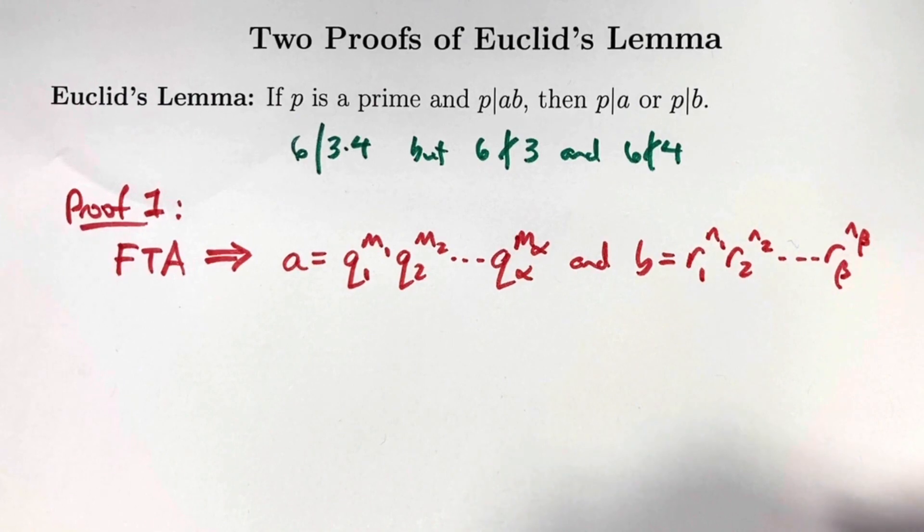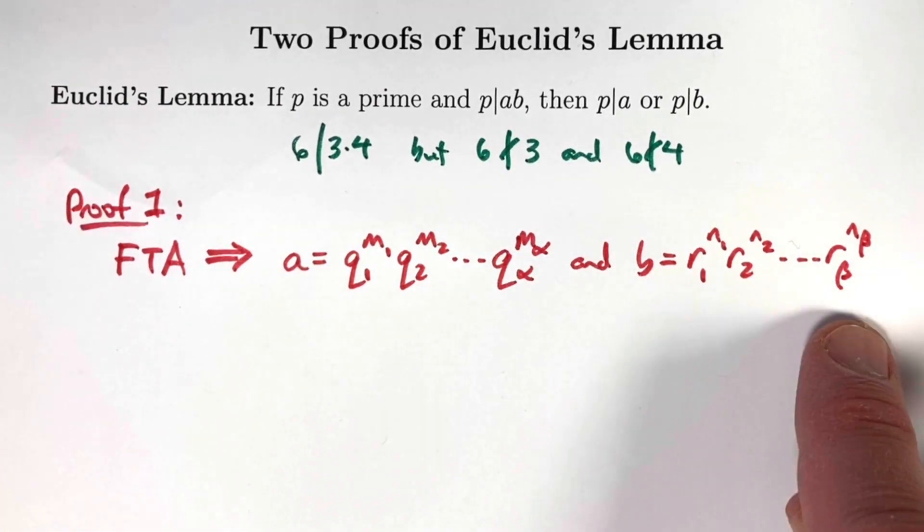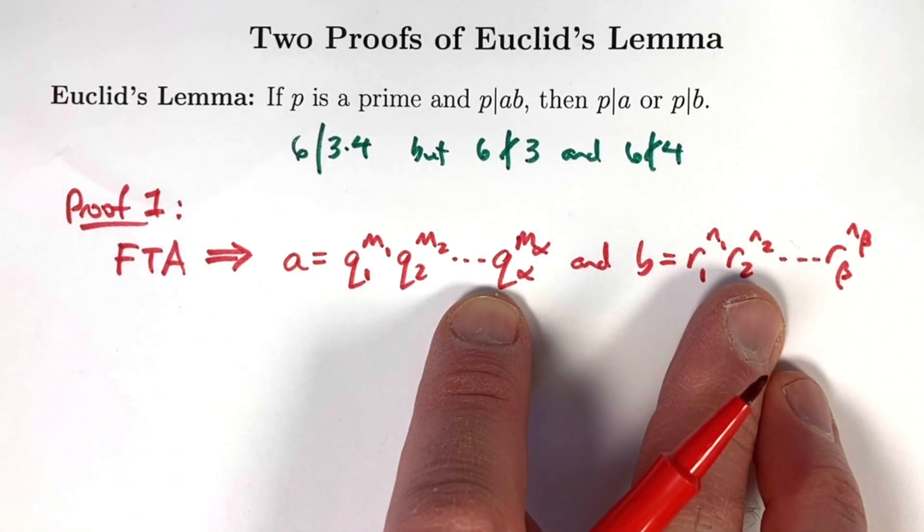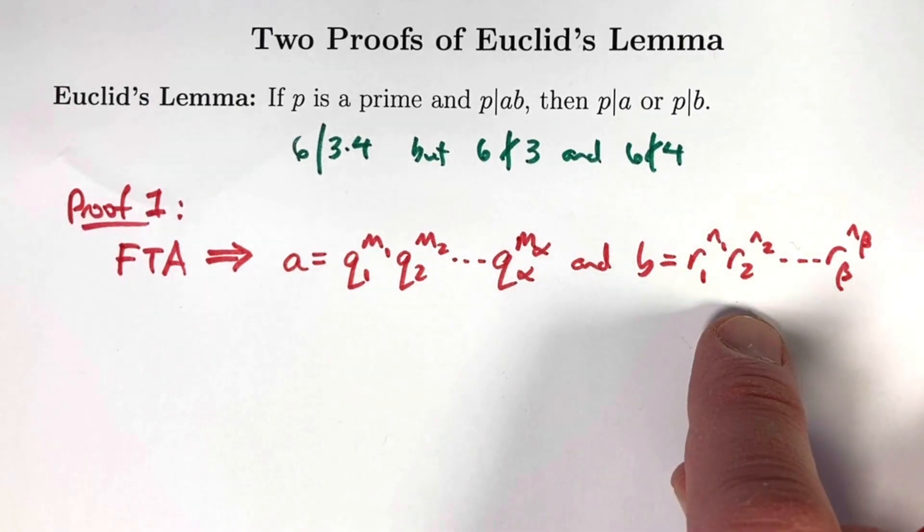Now this is fancy looking notation, but the idea is basic. These qs and these rs are in each case, for both things individually, unique primes, and these ms and ns are positive powers. Could some of the qs equal some of the rs? Yes, they could. a and b could have some prime factors in common.